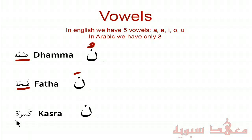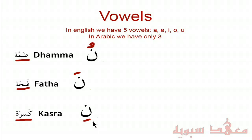Finally, we have the Kasrah. With the Kasrah, it's similar to a Fathah, but it's written on the bottom of the letter. And it has an E sound, so that would be pronounced as Ni. You can watch this video to listen to the letters of the alphabet being pronounced with a Kasrah.